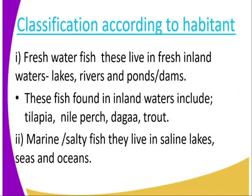When we classify fish according to their habitat, one of the classes we get is freshwater fish. These are fish that live in fresh inland waters. Examples of freshwater fish found in inland waters include the tilapia, the nail patch, the dagger, and the trout.